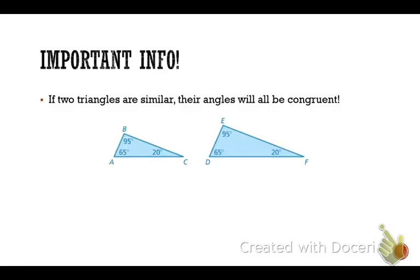Sometimes it's easy to tell and sometimes it's not so easy to tell. In the first slide, you've already written these down — you're given all three angle measures, and you can tell that all three of them are the exact same measure. So even though they're different sizes, we know that they are similar. And if we have two pairs that are equal, we know the third pair is automatically equal.